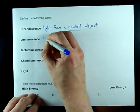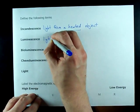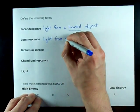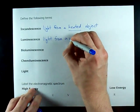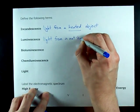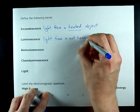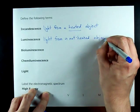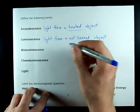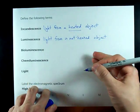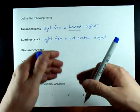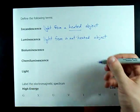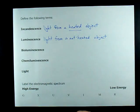Luminescence is the opposite — light from an object that is not heated. Things like LED lights. Fireflies don't give off that much heat, so it's luminescence as well.